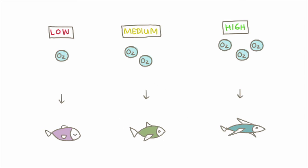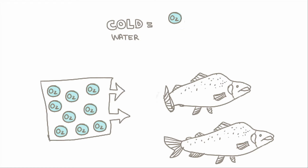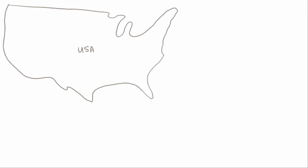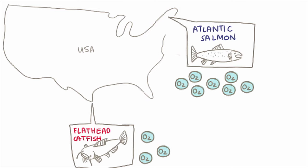But animals also adapt to the amount of dissolved oxygen. Fish like salmon need a lot of oxygen so they can only live in colder places. But fish like catfish can live in warmer waters because they need less oxygen. If you've ever wondered why the kinds of fish are different in different places, this is one reason why.